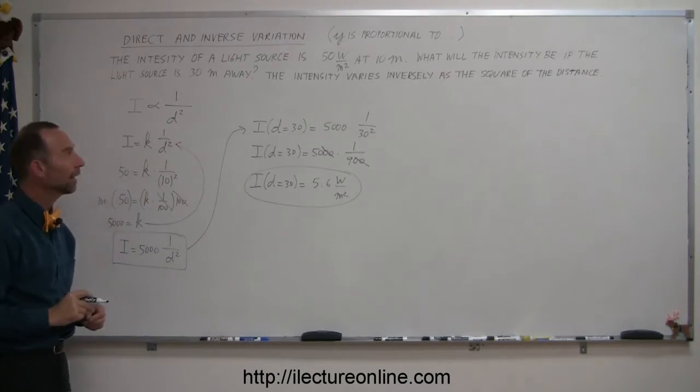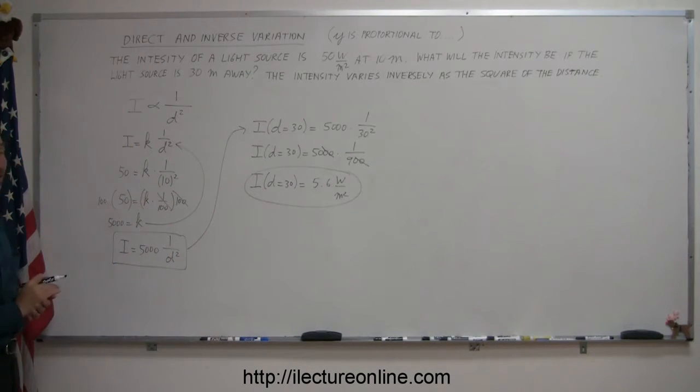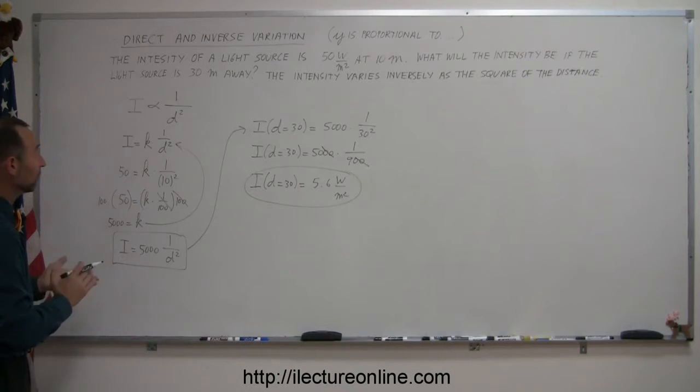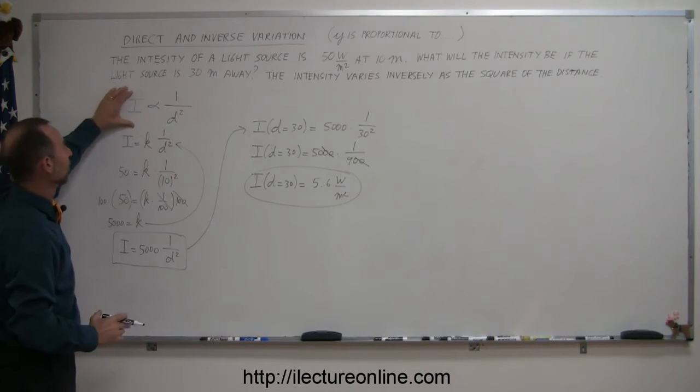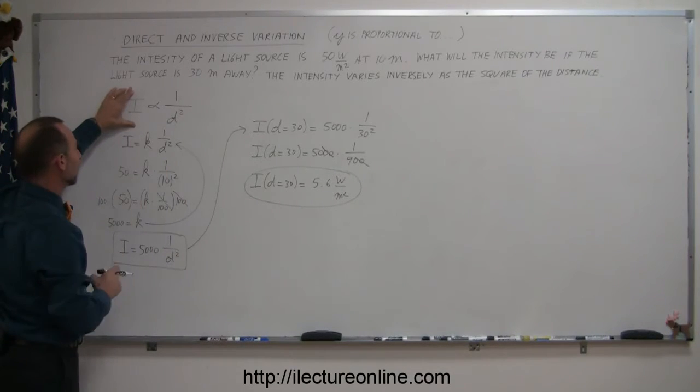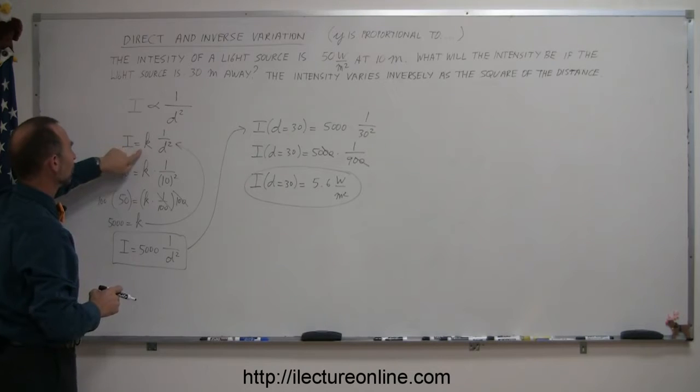There we go. And that's how you use that technique. It's actually quite elegant and quite simple. Again, following the direction: write down your proportionality as is indicated, then change that into an equation by introducing a proportionality constant, k.